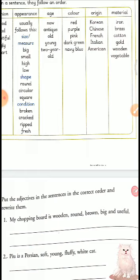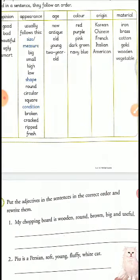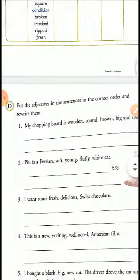Second one: Pew is a Persian, soft, young, fluffy, white cat. What will be the correct order? Opinion comes first — 'fluffy', then age — 'young', then size — 'soft', then color — 'white'. So: Pew is a fluffy, young, soft, white, Persian cat. Like this you have to complete this exercise.